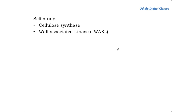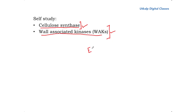This brings us to the end of today's lecture. Some topics for self-study: cellulose synthase, the multi-subunit enzyme in the plasma membrane that synthesizes and secretes cellulose chains assembled into microfibrils; and wall-associated kinases, enzymes that protect the cell from pathogen attack. The next lecture will cover the endomembrane system, starting with the ER. Please subscribe to Utkulp Digital Classes and press the bell icon to stay up to date. Thank you.